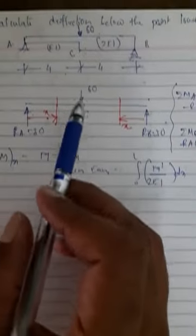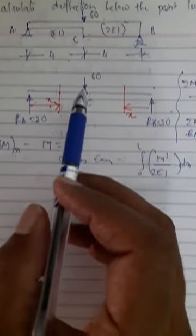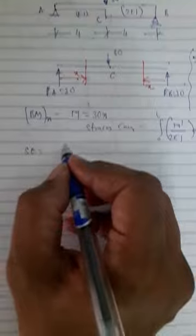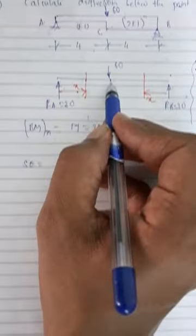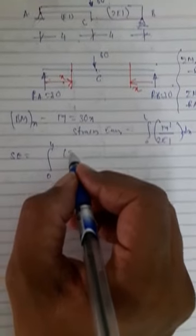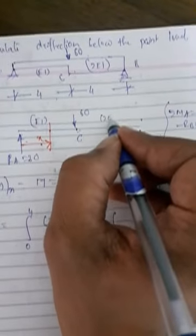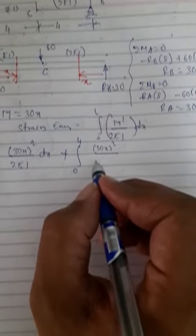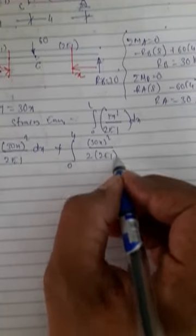The generalized strain energy equation is the integration from 0 to L of M² by 2EI dx. In this beam there are two parts, AC and BC, so I will find strain energy for each and add them together. Strain energy equals: for AC, integration from 0 to 4 of (30x)² divided by 2EI dx, plus for CB, integration from 0 to 4 of (30x)² divided by 2 into 2EI dx, since the EI value for BC is 2EI.